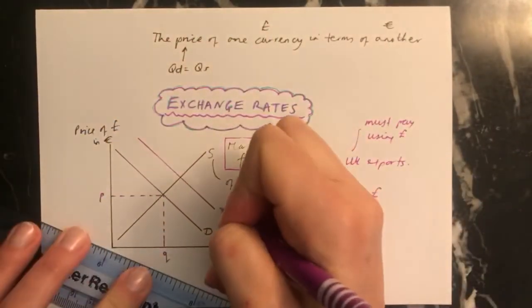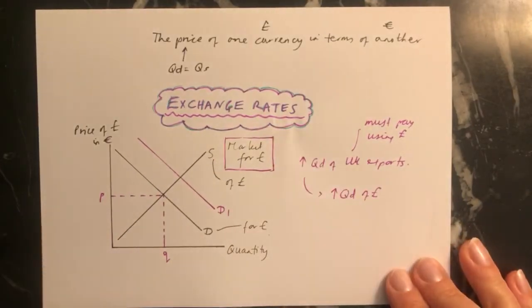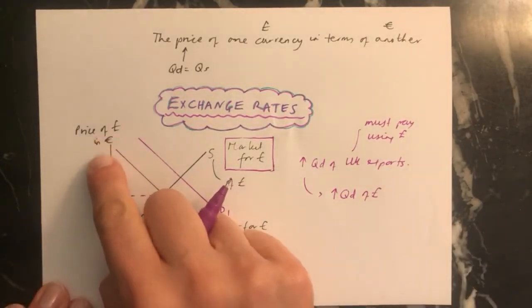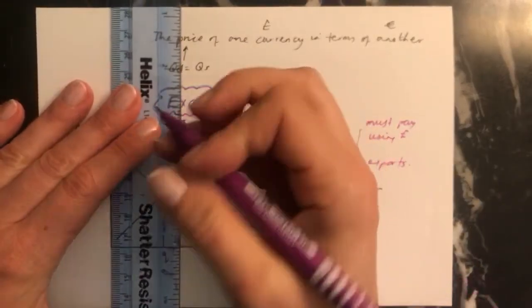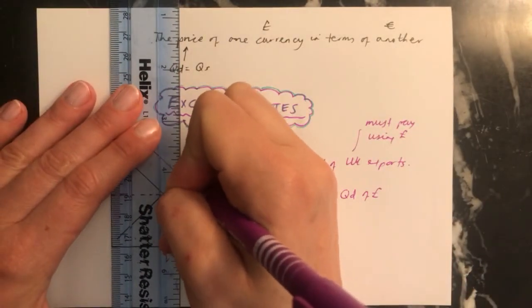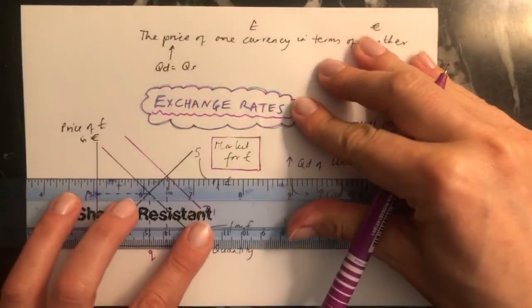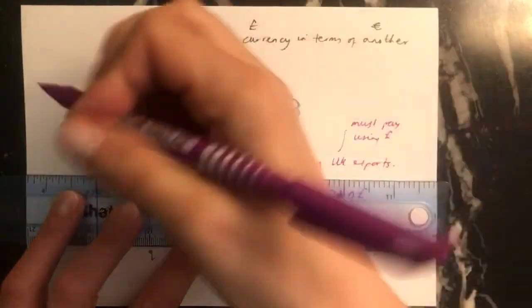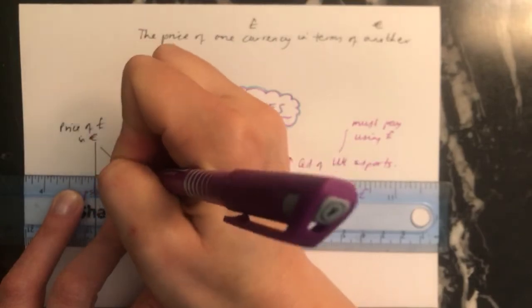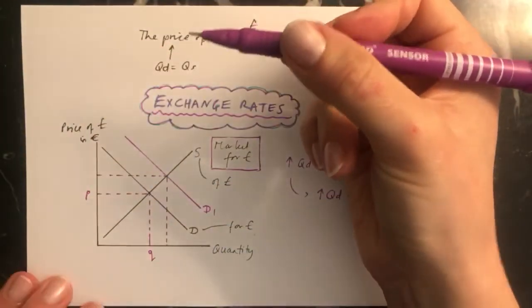And you put in your nice, clear D1. And then all you do to find the new price of pounds in terms of euros is you put in the dotted lines for your new equilibrium, which is here. And that will give you the new exchange rate. It will give you the new price of pounds in terms of euros.